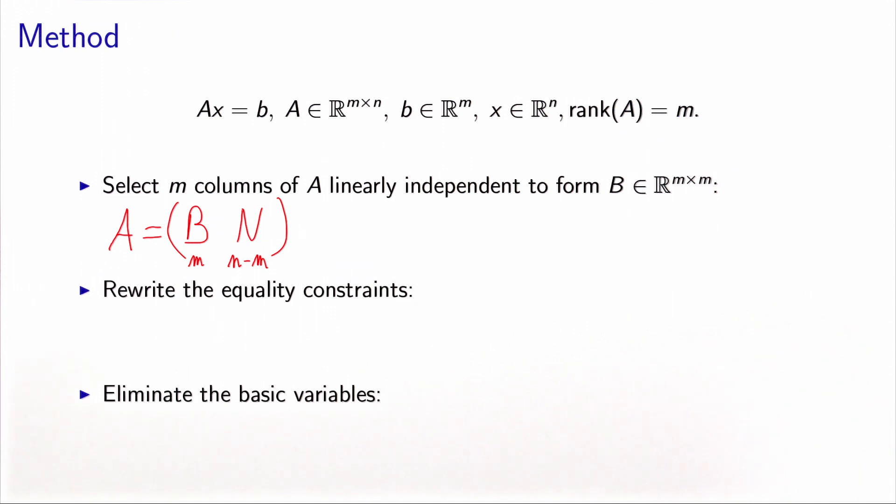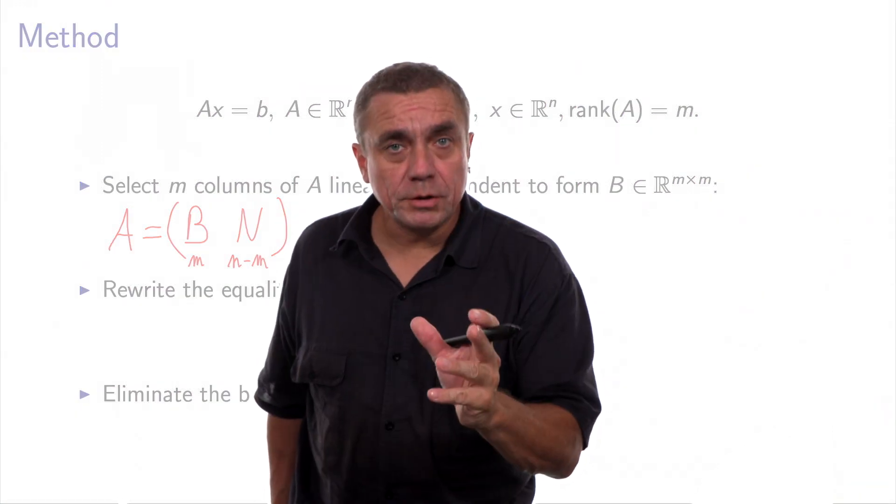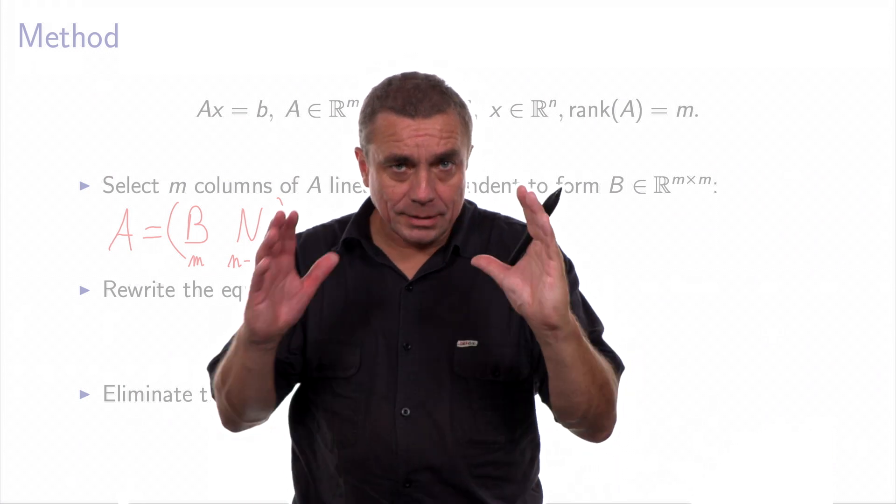But we don't necessarily have to choose the first m columns, like I put in this example. So what we could do is to make a permutation of the columns, so that we put the columns that we desire to consider in the beginning. So the general way to write the same decomposition is by saying, let's permute the columns of the matrix A. So P is a permutation matrix. If you remember, a permutation matrix is the identity matrix such that the columns have been permuted.